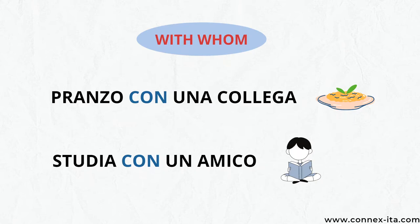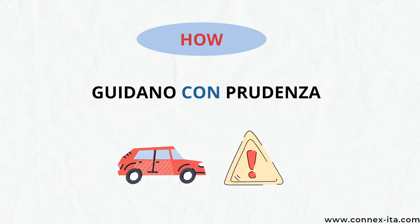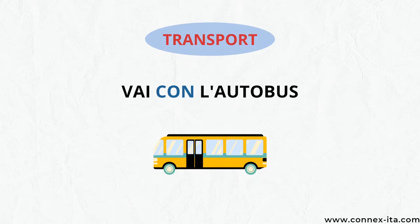Here, the preposition 'con' is placed before the people with whom you are doing something. In the next sentence, the preposition gives you information on how you are doing an action: 'Guidano con prudenza' — they drive with caution. Then, same as the preposition 'in', 'con' can be used with the means of transport. 'Vai con l'autobus' — you go by bus.